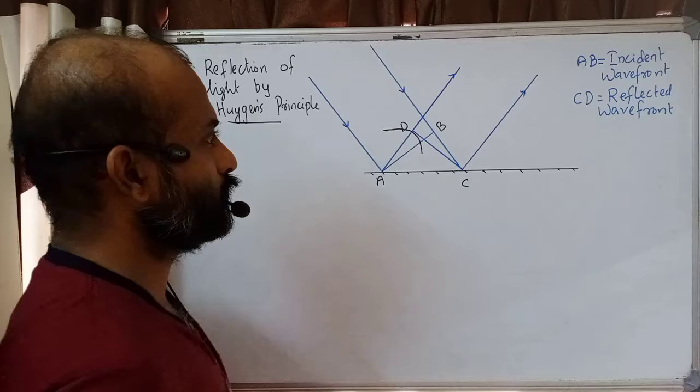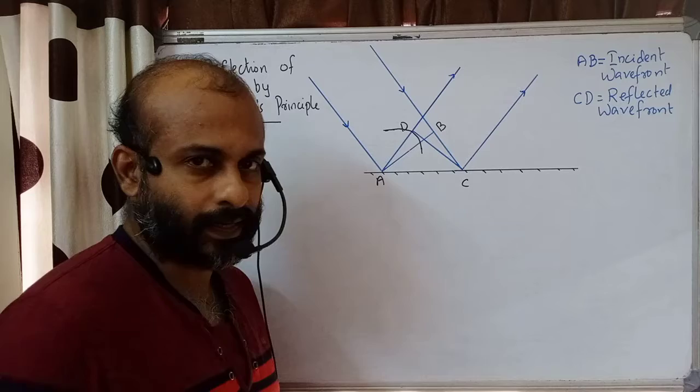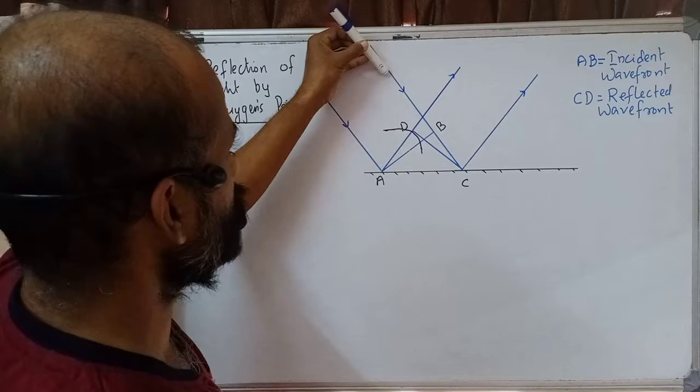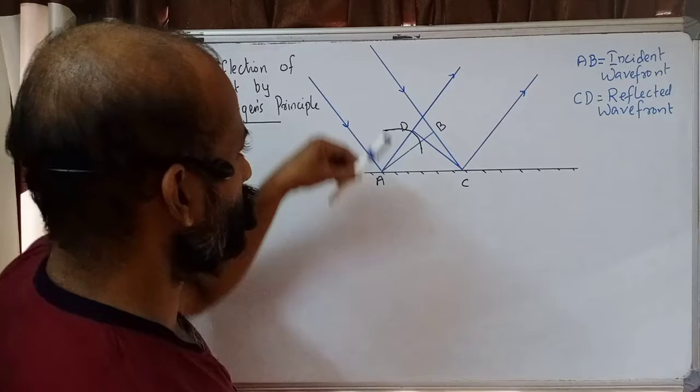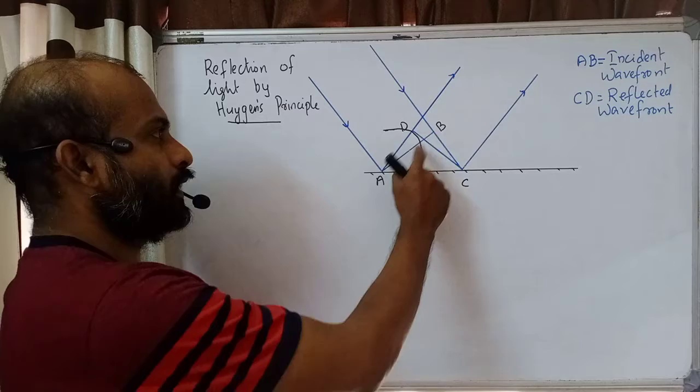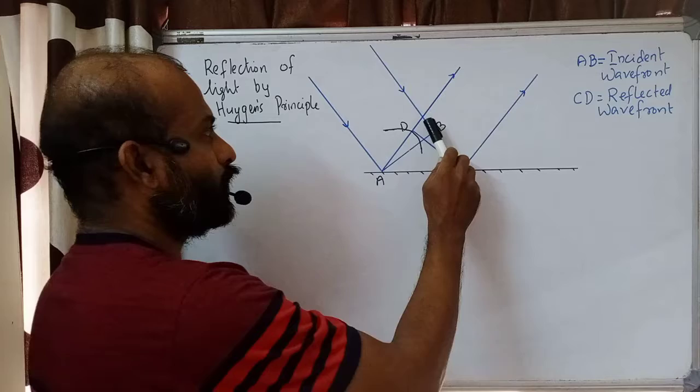These light rays meet the mirror at points A and C, so A and C are the points of incidence. Wavefronts are always perpendicular to the rays; the rays indicate the direction of propagation of the wavefront. So the two rays are perpendicular to the incident wavefront. Here AB is the incident wavefront, traveling forward and going to strike the mirror surface.